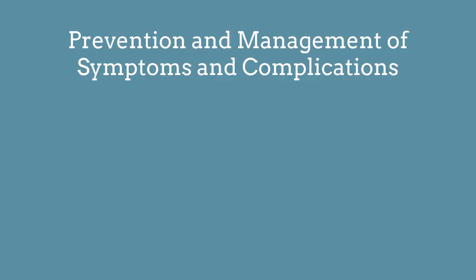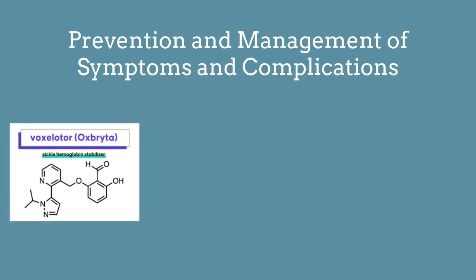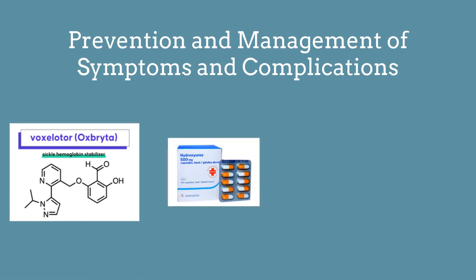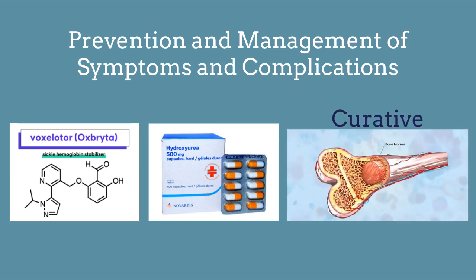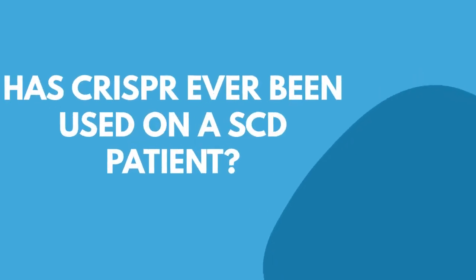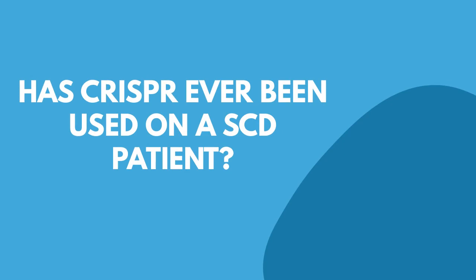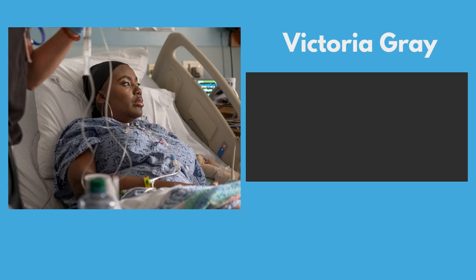Most common treatment options for sickle cell disease generally have the goals of prevention and management of symptoms and complications. For example, voxelotor prevents red blood cells from forming into the sickle shape and sticking to one another, improving blood flow, and hydroxyurea helps to reduce the number of episodes of pain crises and acute chest syndrome. Currently, blood and bone marrow transplant is the only curative treatment for sickle cell disease, but novel research into the use of CRISPR-Cas9 has shown promising results. Has CRISPR ever been used directly on a patient with sickle cell disease? Well, it has — the case of Victoria Gray serves as a notable example, as she is the first sickle cell disease patient to be treated with CRISPR.